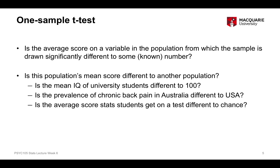We could also ask whether the average score that statistics students get on a test is different to chance. So do students perform better than chance? If the test is made up of true or false questions, we'd expect an average score of 50% by chance, because there's a 50-50 chance of getting each question right. So is the average score significantly different to what they'd get due to chance?